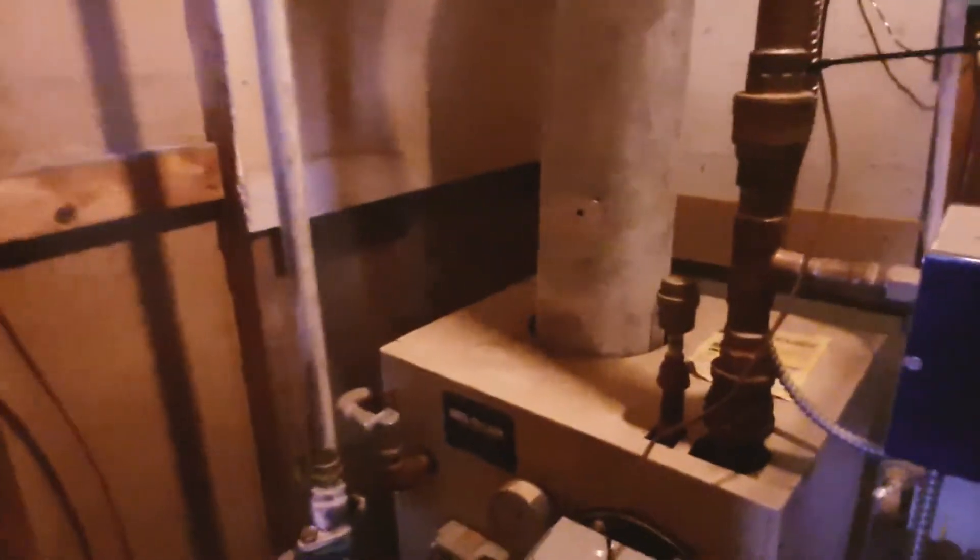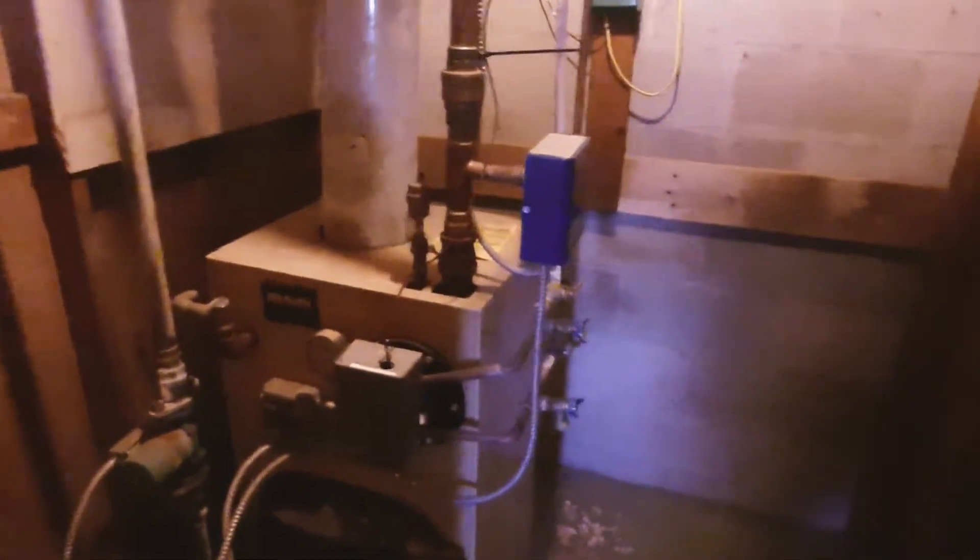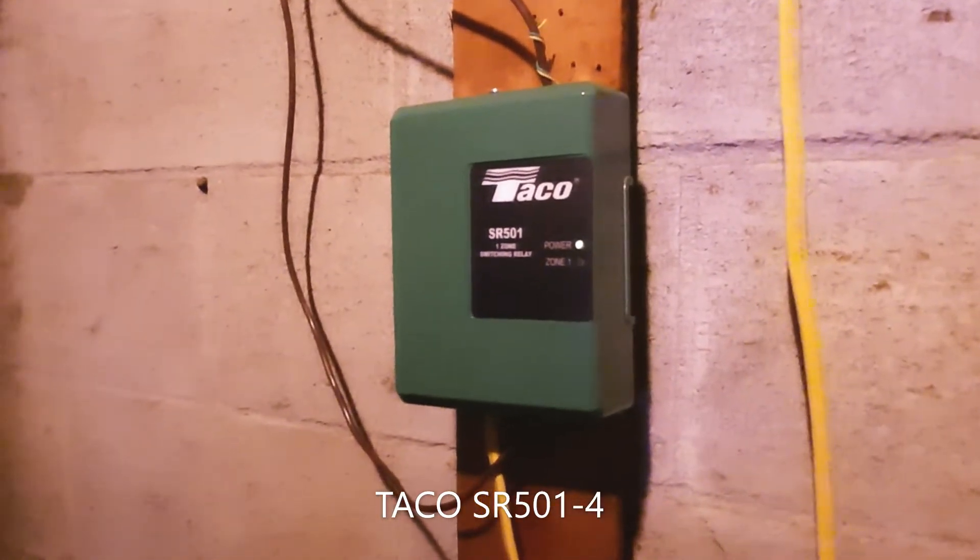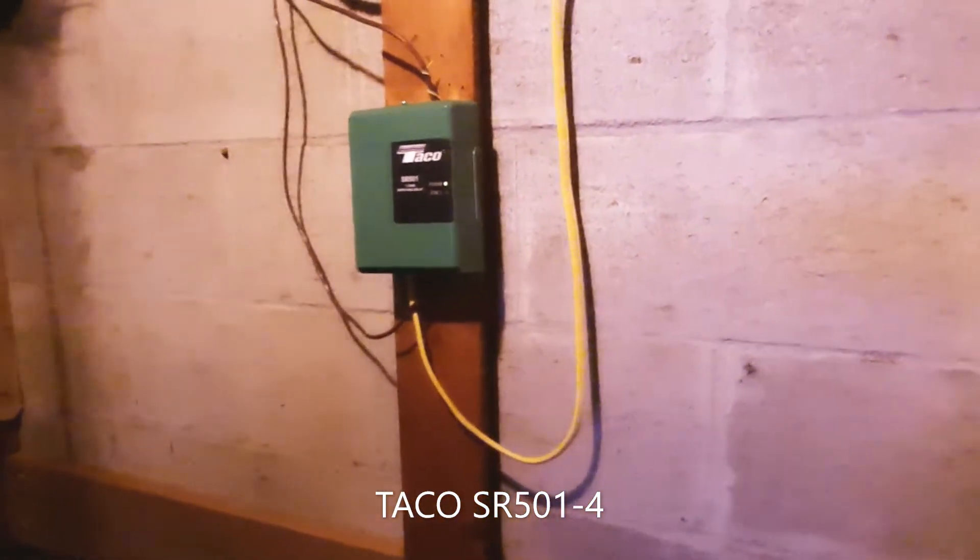The simple way of wiring this up so that it runs off a Nest, because you need a third common wire, is installing one of these Taco one-zone switching relays. It's an SR501. If you're going to do this yourself, you need to have a little bit of experience wiring electrical.